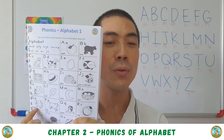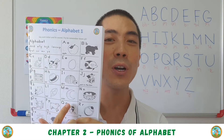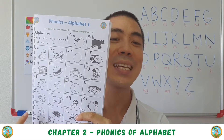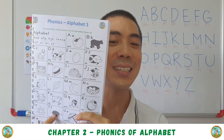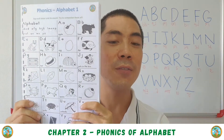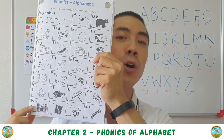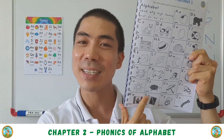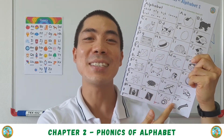So let's read together: P, P, Q, Q, R, R, S, S, T, T, U, V, V, W, W, X, X, Y, Y, and Z, Z, Z.